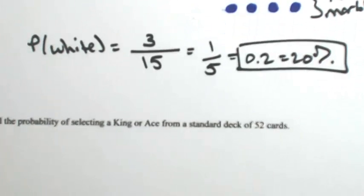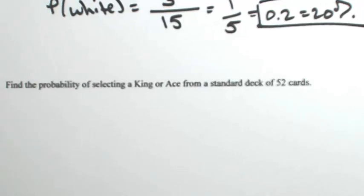Let's look at one more. Find the probability of selecting a king or an ace from a standard deck of 52 cards. We already know the sample space is 52 possibilities. How many of them are kings and how many are aces?